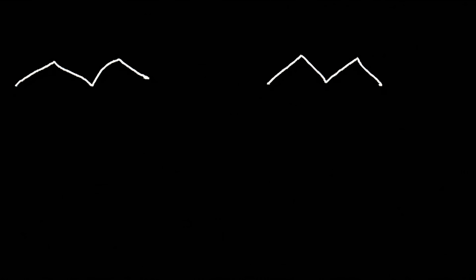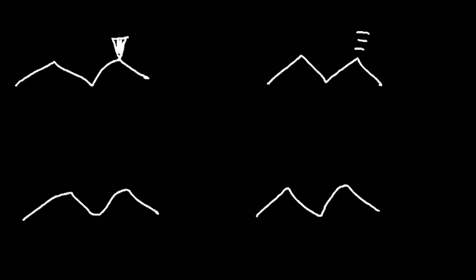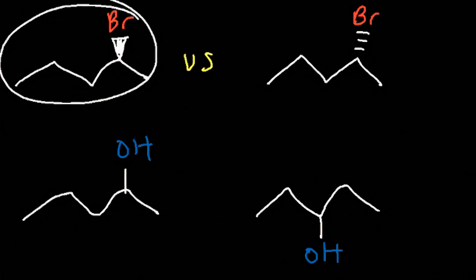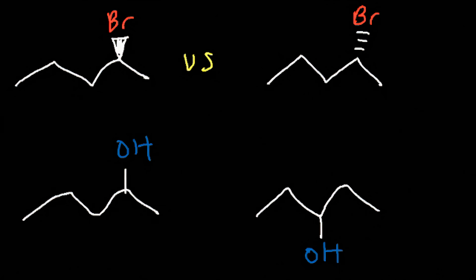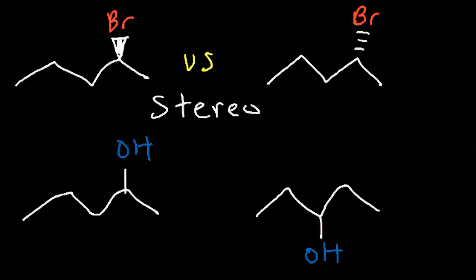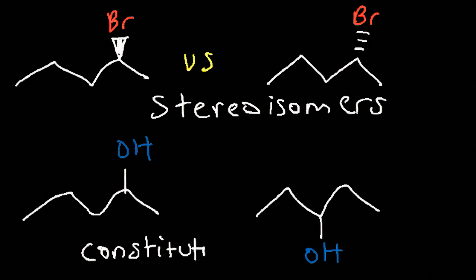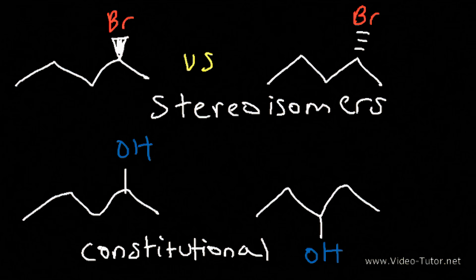Let me give you two pairs of compounds. Let's compare the first two — what is the relationship between these two? And what is the relationship between the other two molecules? The first two are known as stereoisomers; the last two are constitutional isomers. For all isomers, they all have the same chemical formula but a different structure.